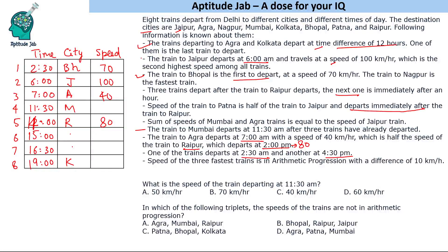The second highest speed is Jaipur at 100 — that is already done. Bhopal is at 70. Nagpur is the fastest train, so Nagpur must be the fastest among the remaining slots. Patna's speed is half of Jaipur's, so Patna is 50 kilometers per hour, and it departs immediately after the train to Raipur, so Patna is at 3 PM.